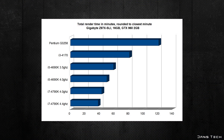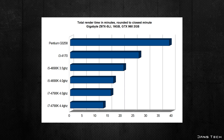For the first project, the i7 4790K rendered the video in 43 minutes, the i5 4690K taking 59 minutes, the i3 4170 taking 81 minutes, and the Pentium G3258 taking 121 minutes. As for overclocking, applying a 500 MHz overclock to the i7 improves render times by 5 minutes, and overclocking the i5 by the same amount improves render times by 9 minutes.